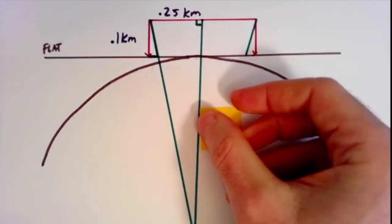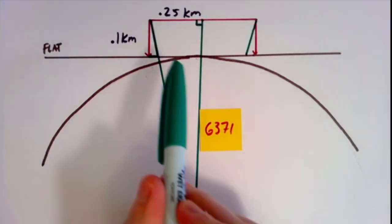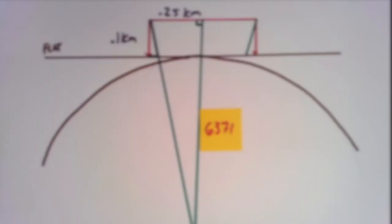Now the radius of the earth is about 6,300 kilometers. And so that's the distance from here to here. So we actually have two right triangles here. We have this large one that goes to the top of the building. And we have the smaller one that goes to the base of the building. And I'm going to redraw these triangles so that we can compare them more easily.